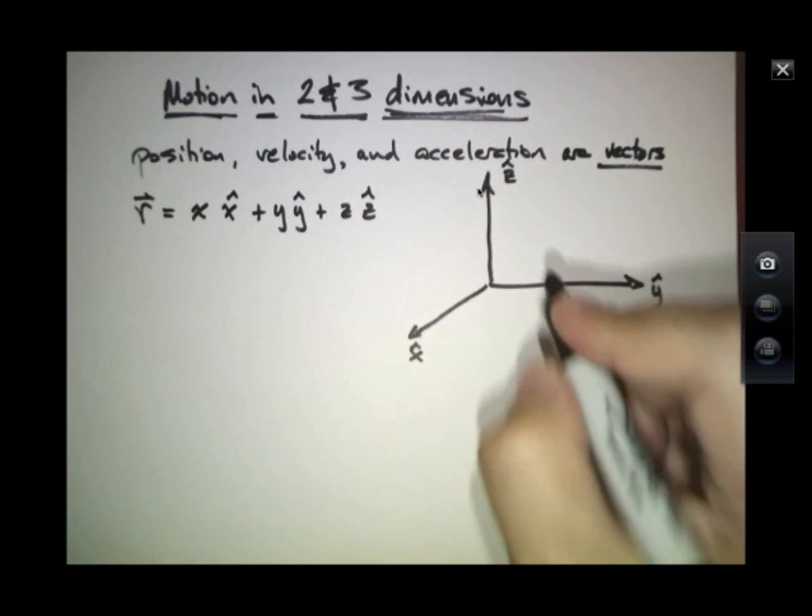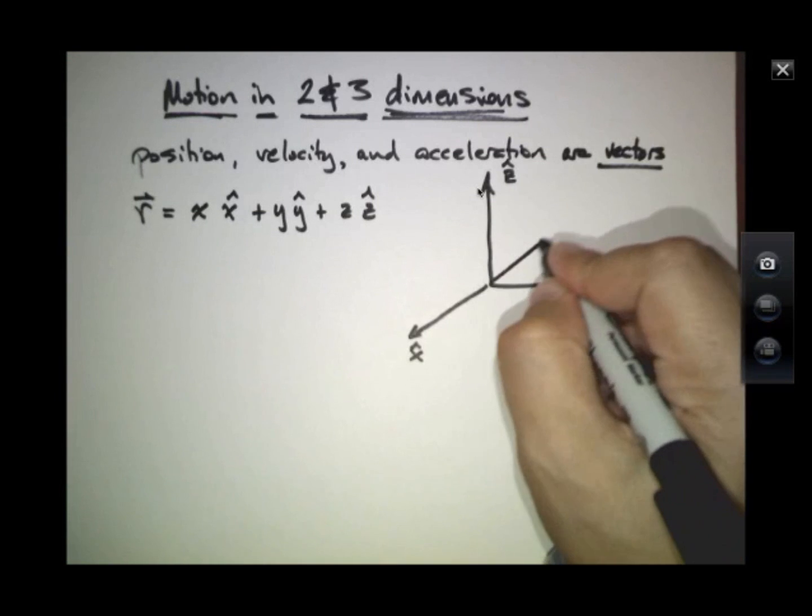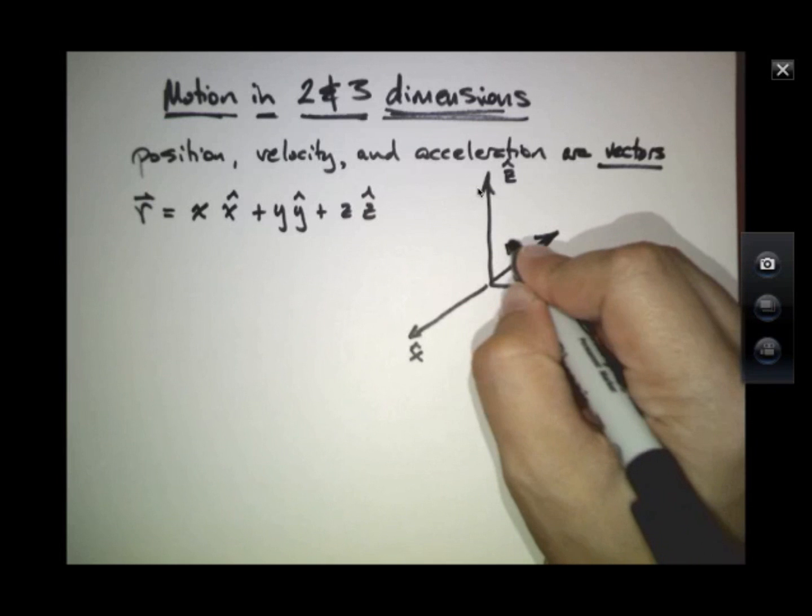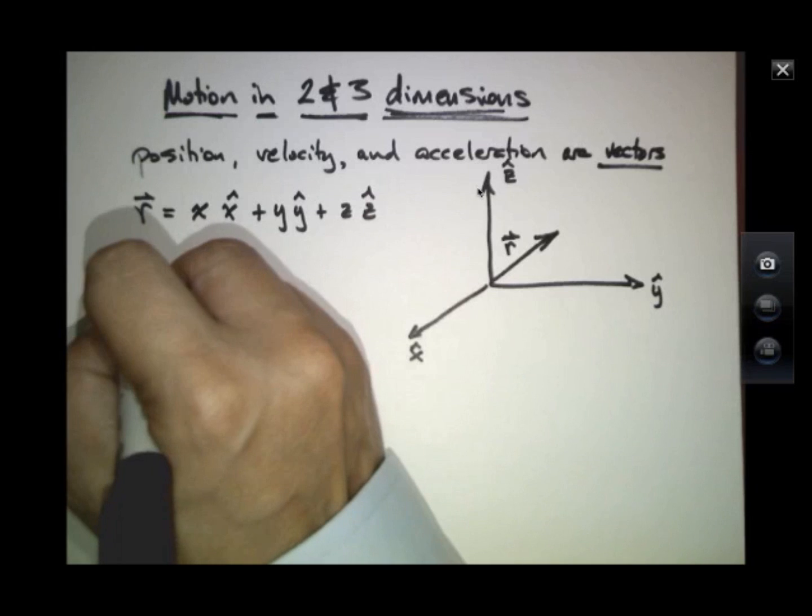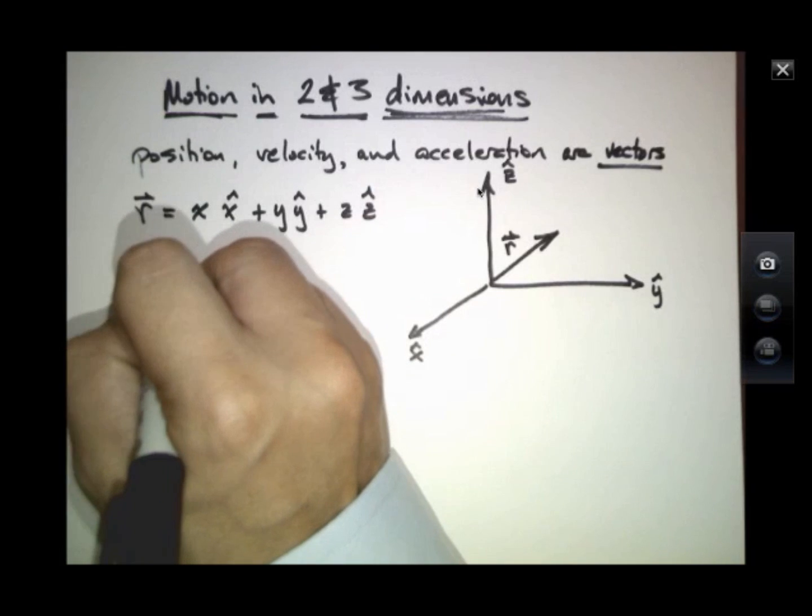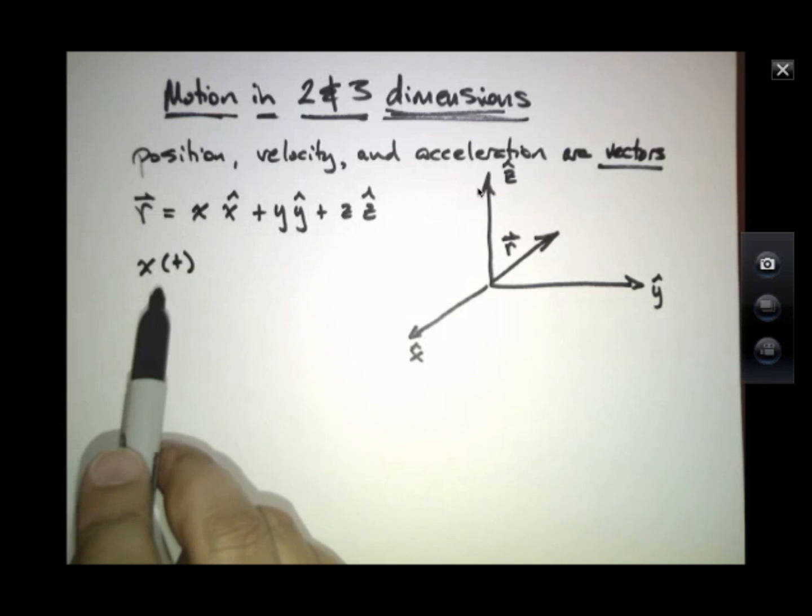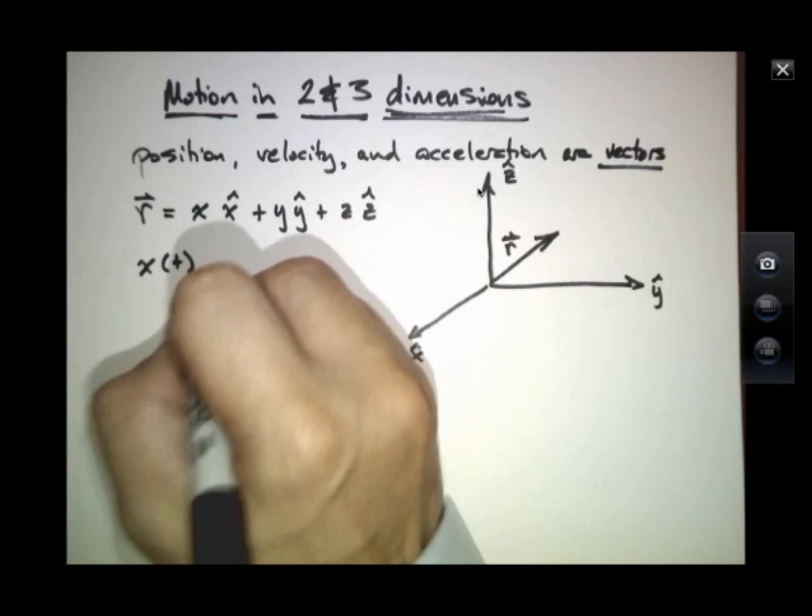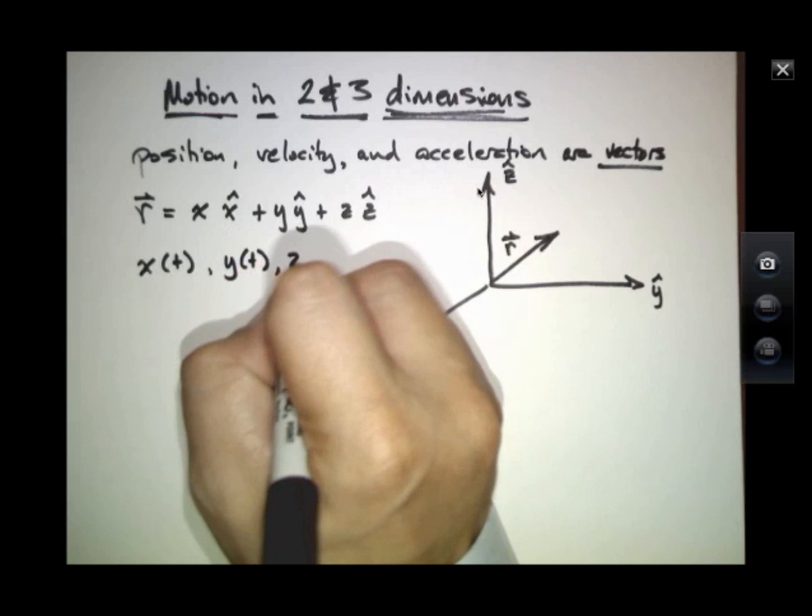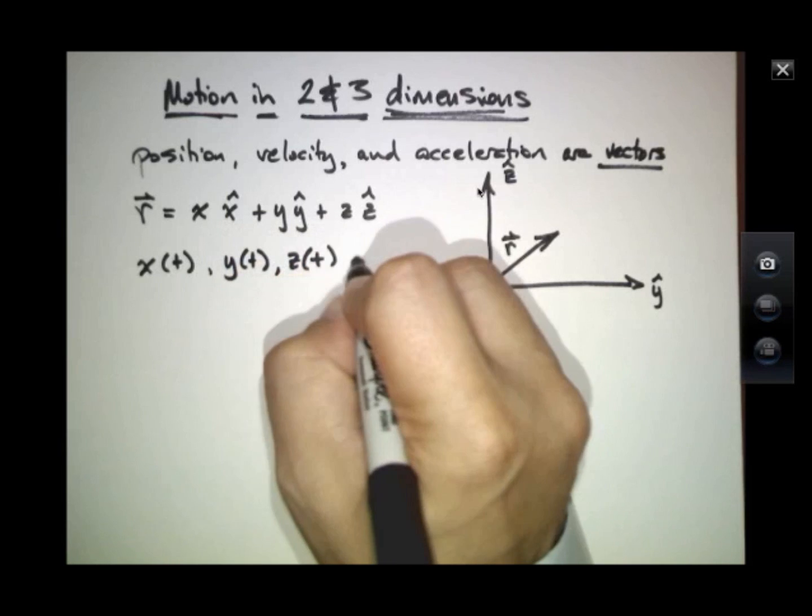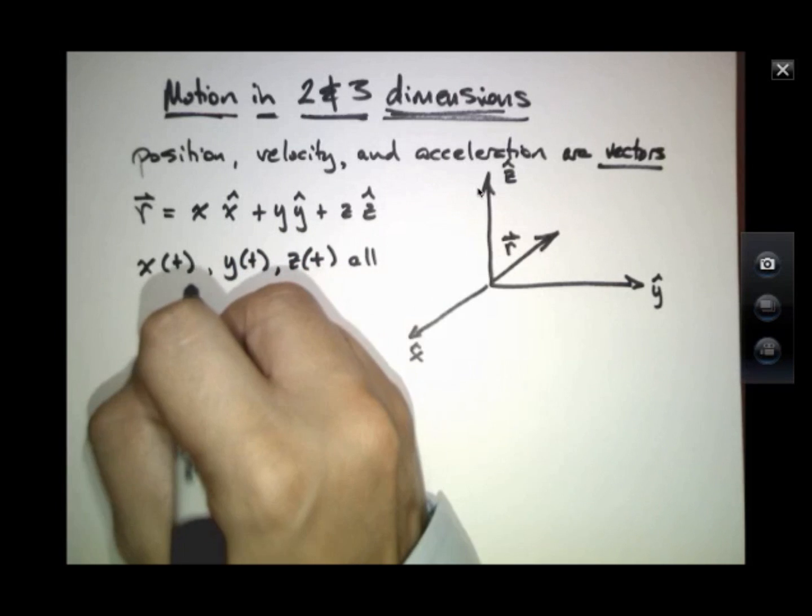And up until now, these quantities could depend on time. So here might be our vector R, but just as we've been developing kinematic relationships between position, velocity, and acceleration for some quantity x as a function of time, it's possible that y and z all depend on time as well.